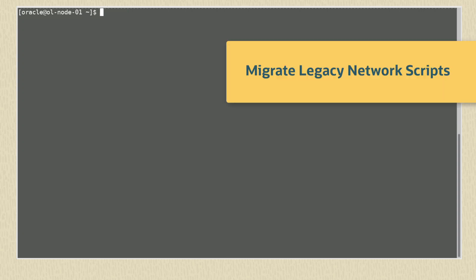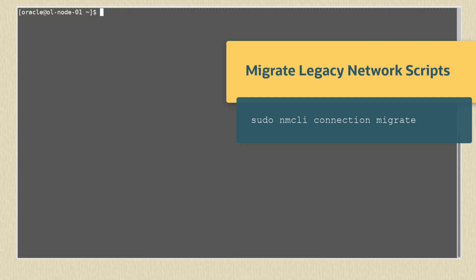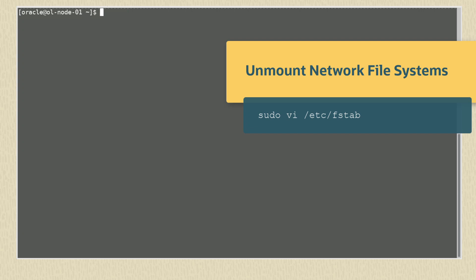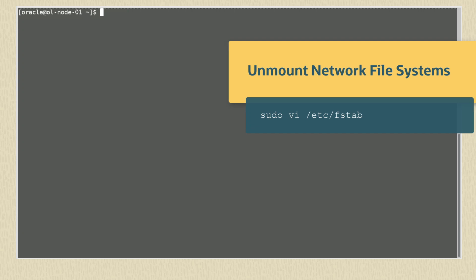If the Oracle Linux 8 system was previously upgraded from Oracle Linux 7 and retained the use of legacy network scripts, you must migrate these scripts as they're no longer usable in Oracle Linux 9. Use the command sudo nmcli connection migrate. If you have any mounted network file systems, unmount them and comment them out in the /etc/fstab file. They can be remounted after the upgrade.